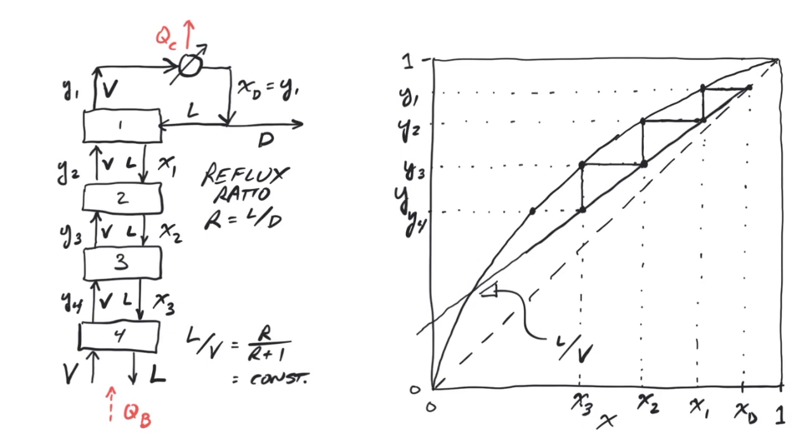This graphical process is called stepping off the stages, and allows the design engineer to determine how many stages they will need to achieve a certain purity of product, given a particular starting or feed composition.